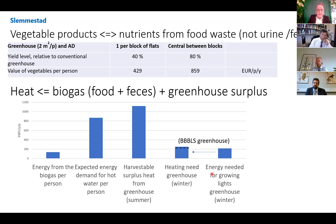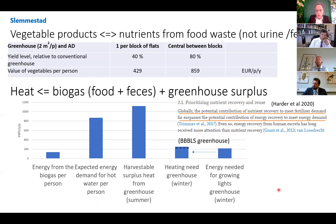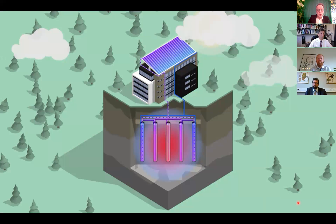You can probably make use of perhaps a third of this with heat pumps to heat incoming cold water to the building during summer. The greenhouse also needs heating, and in this case the growing lights will provide almost all the heat needed in a well-insulated bubble greenhouse. This confirms what Harder says: globally, the potential contribution of nutrient recovery to meet fertilizer demand far surpasses the potential contribution of energy recovery to meet energy demand. Nutrients are much more valuable than the energy in these wastes.